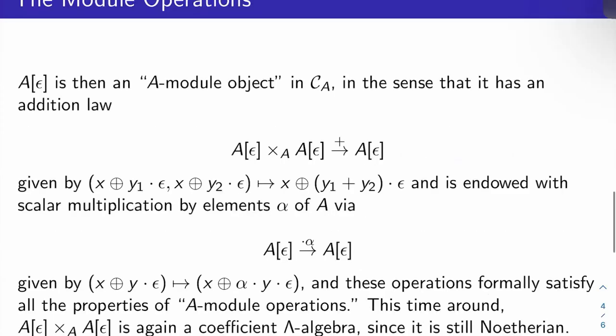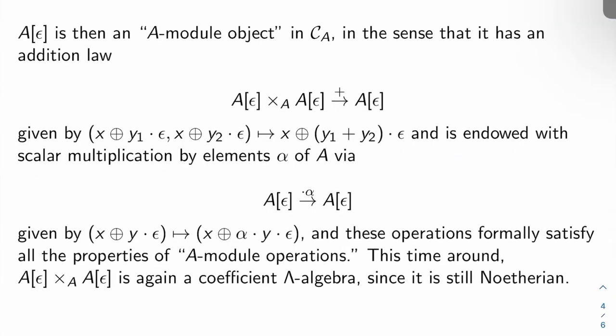So A[ε] is an A-module object in the category C_A, in the sense that it has an addition law A[ε] ×_A A[ε] → A[ε]. We'll call that map +. And what do you do? You send (x ⊕ y₁·ε, x ⊕ y₂·ε) to x ⊕ (y₁ + y₂)·ε, just like we did last video.